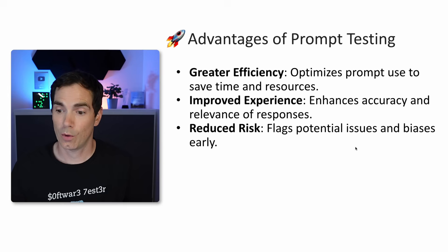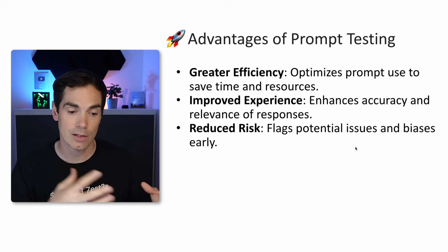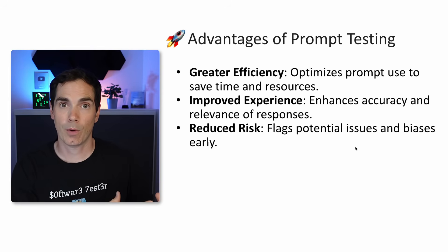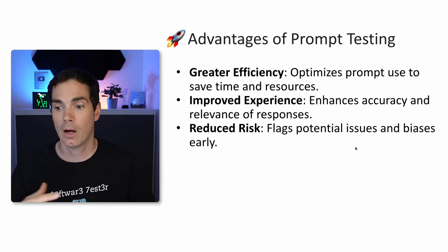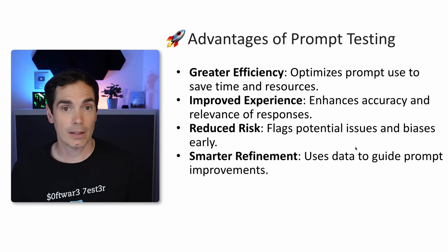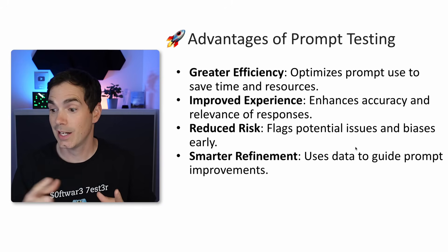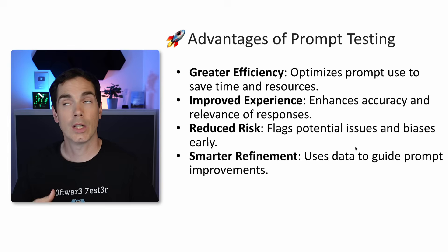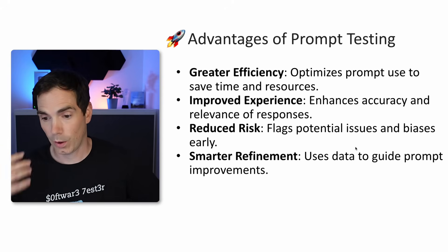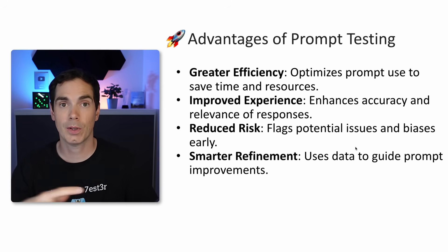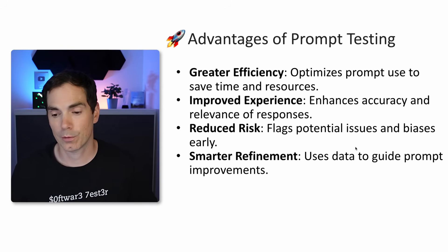You can reduce risks — flag potential issues and biases earlier. As mentioned, LLMs are trained with different data sets and may be differently biased, so it's important to check with your prompts across different LLMs and different training data sets to see what potential issues might arise. Smarter refinement: use data to guide prompt improvements. If you have knowledge about the test data together with the prompts you put into the system, you get much better improved outputs.